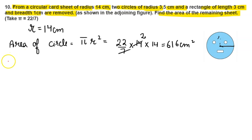Now we find the area of the small circle. Area of small circle is πr² where radius is 3.5 cm, so 3.5 × 3.5. The area of the small circle is 22 × 0.5 × 3.5 = 38.5 cm².